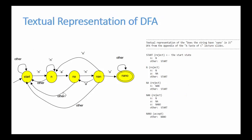Now we're going to look at how to take our picture of a DFA — supposed to recognize the pattern 'nano' — and convert that to a textual representation. This is a step between the graphical representation and getting into C code. From the textual representation, we should be able to directly translate into C code. Each state, like start, n, na — all of those states are really functions. They take a character as input and return another state.